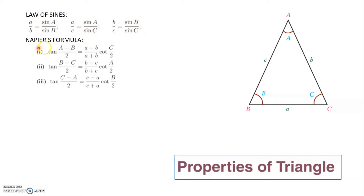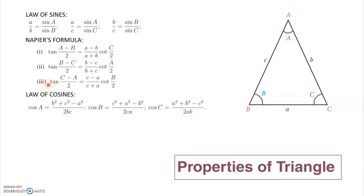Next, Napier's formula. For this triangle, tan of (A minus B) by 2 equals (a minus b) by (a plus b) into cot C by 2, and so on for the second and third. The law of cosines: cos A equals b squared plus c squared minus a squared divided by 2bc, and similarly for cos B and cos C.